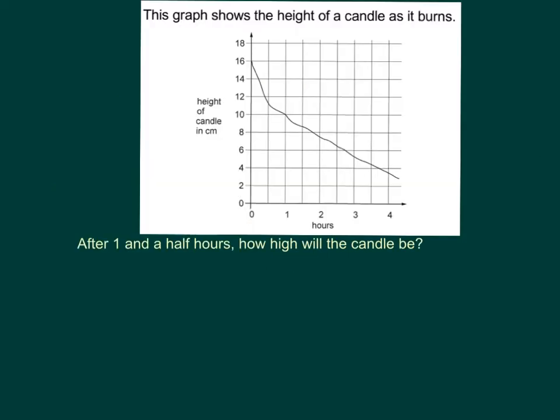Another type of graph is a line graph. Line graphs tend to measure a change over time, so one of the axes will always be a time. In this example, we've got number of hours along the bottom on our x-axis and we've got the height of a candle in centimetres on our y-axis. Have a look at this question. After one and a half hours, how high will the candle be?